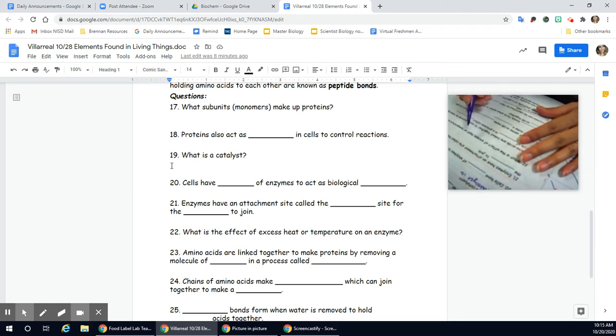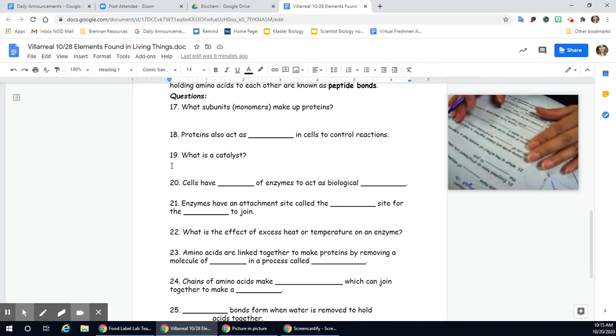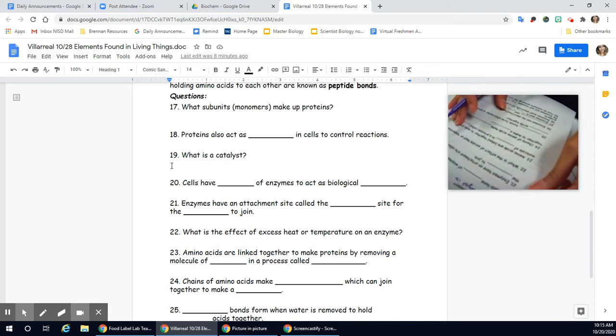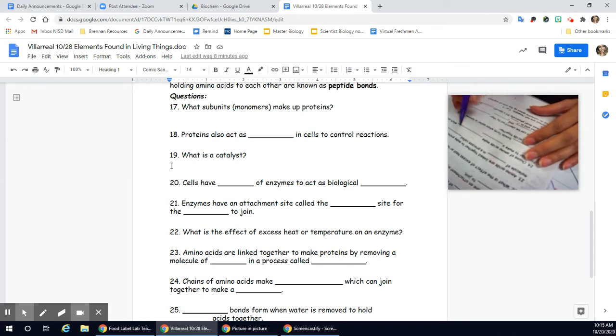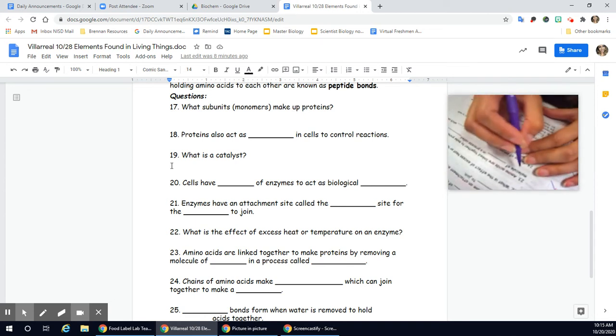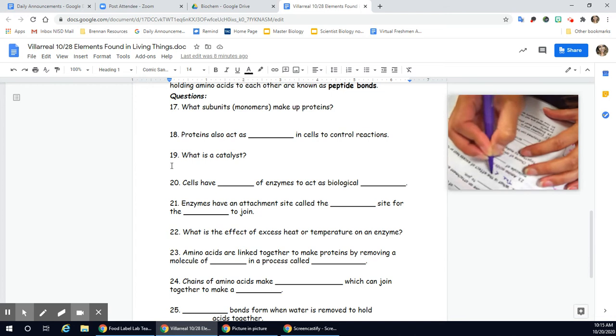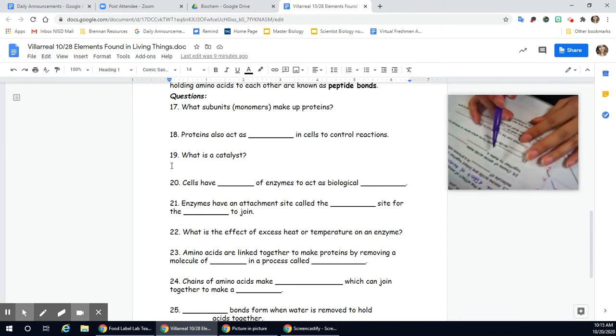21, enzymes have an attachment site called the blank site for these blank to join. 22, what's the effect of excess heat or temperature on an enzyme? So what happens, so you would start with, the effect of excess heat on an enzyme is, blah, blah, blah.